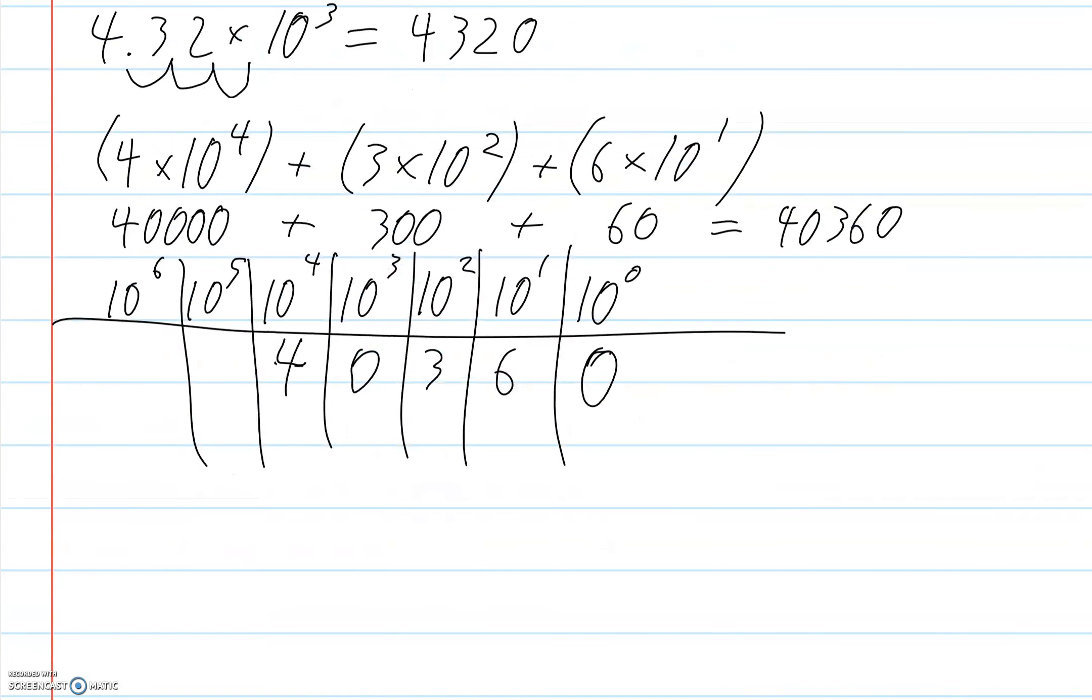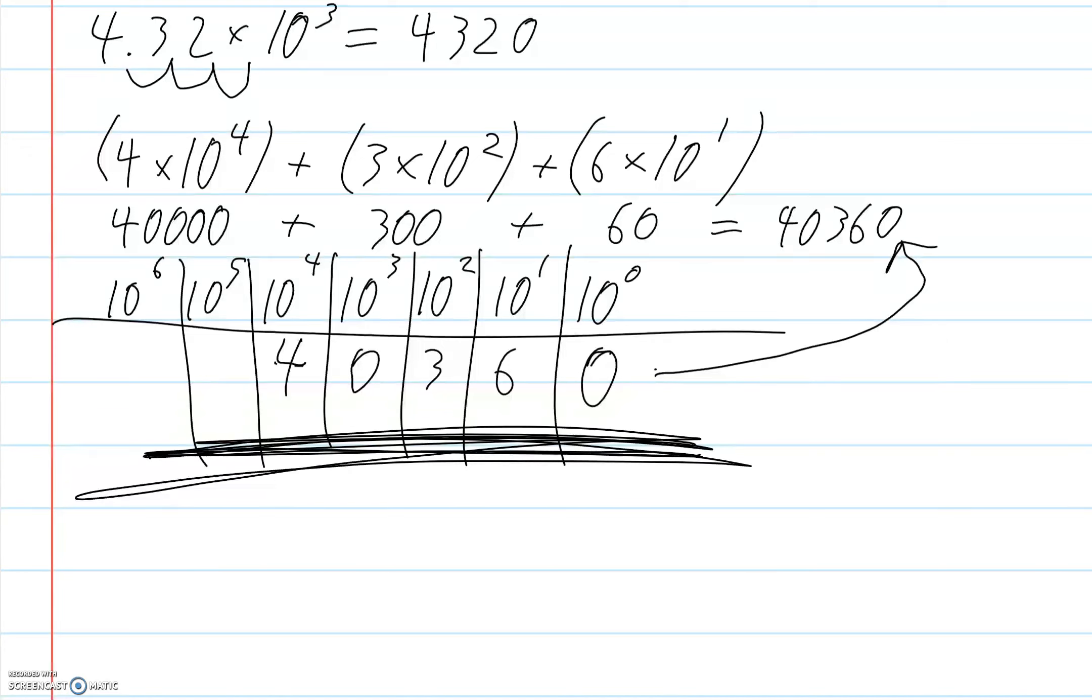That number looks an awful lot like that number. So it's really quite cool. This is how our place value system works. This is an important fact of how we count. The fact that we count with base 10 is probably due to our 10 digits, but it has become so much more than that. It's become fundamental to the way that we do math.